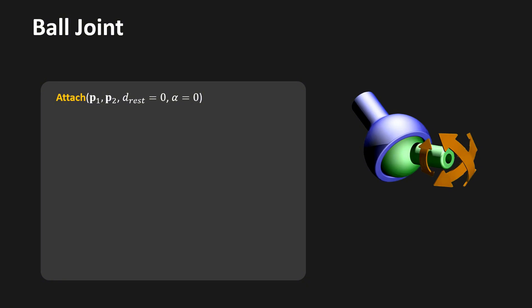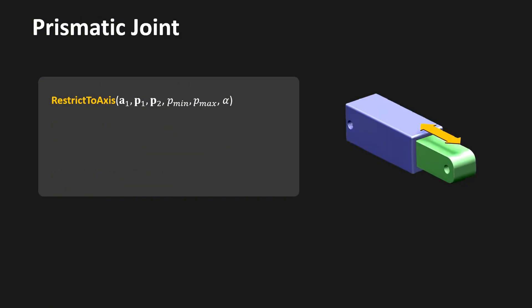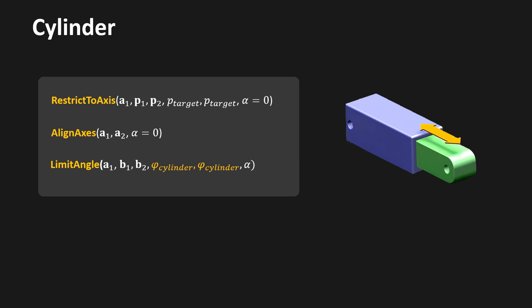To simulate a ball joint, we first align the attachment points as before. To handle a swing limit, we limit the angle between main axes a1 and a2; to handle a twist limit, we limit the angle between secondary axes b1 and b2, using the average of a1 and a2 as the rotation axis. For a prismatic joint, instead of forcing attachment positions to the same location, we restrict the attachment point of the second body to lie on the main axis of the first body, consider limits, align the main axes, and restrict torsion around a1 — often forced to zero by setting phi and alpha limits to zero. A cylinder joint is a prismatic joint where the distance between attachment points is forced to a given value p-target.